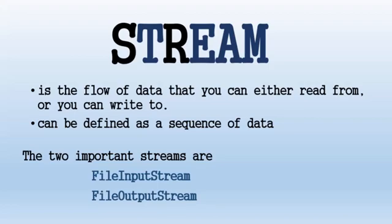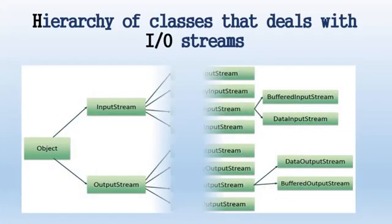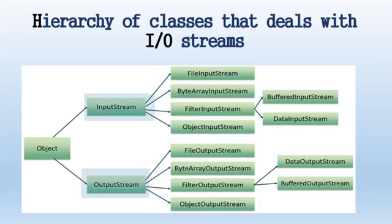To understand the origin of the class, FileInputStream and FileOutputStream, let us see the hierarchy of classes which deals with input and output streams. The basic streams are InputStream and OutputStream. They are both descendants of the Object class.